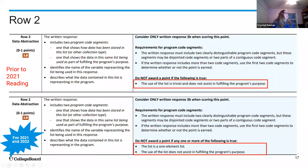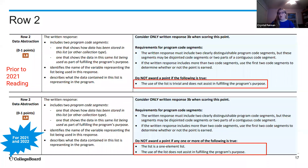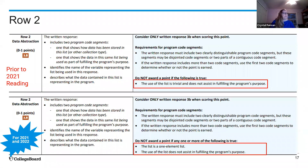Rubric row 2 looks at whether students have a list, have named it, and described what it contains. Naming the list is really important — without it, readers don't always know what students are talking about. The change we made was decoupling a bullet under 'do not award a point': we clarified that a trivial list means a list with only one element (they need at least two), and also that the list does not assist in fulfilling the program's purpose — it's more of an 'or' than an 'and.'